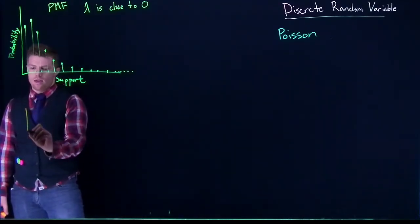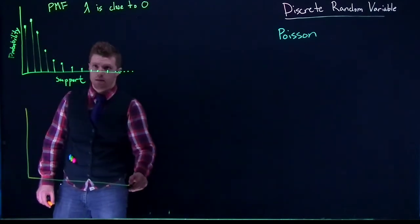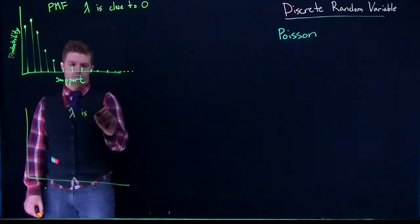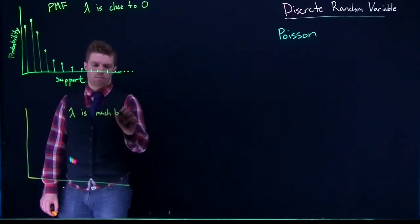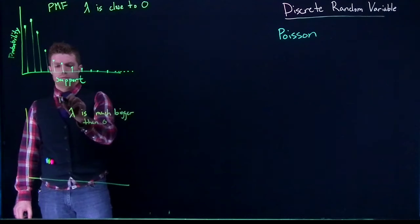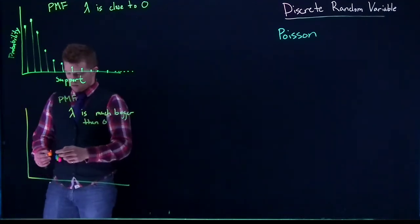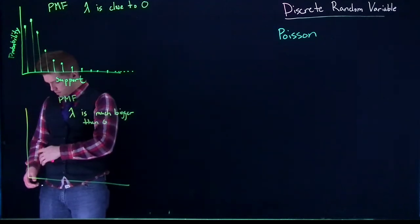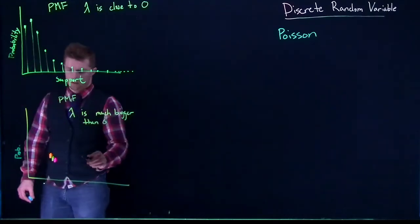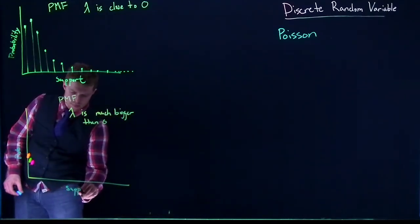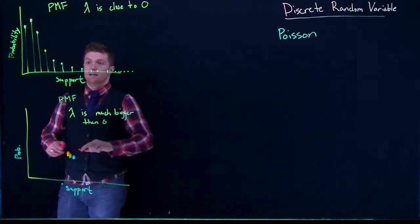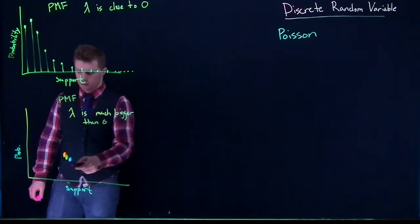Okay, now let's say that we have a bigger lambda. So we'll say lambda is much bigger than zero. We use this as our PMF again. And this will be our probability. Again, let's label it. And this is going to be our support. Okay, so if this is our scenario again, and our lambda value is much bigger than zero...